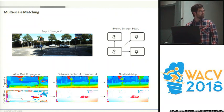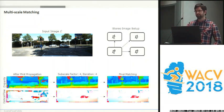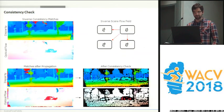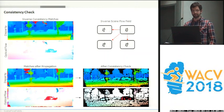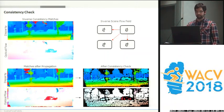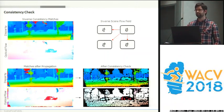As you can see, some of the matches are not correct, mainly because occluded areas exist and there are motions that leave the image boundaries. We remove these areas by a consistency check.